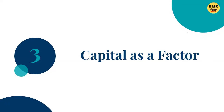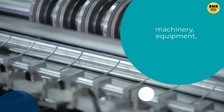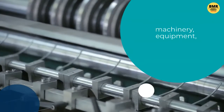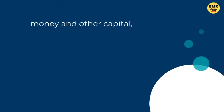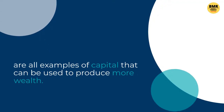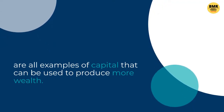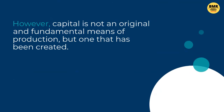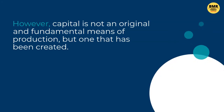Number three: capital as a factor. Human creations such as tools, machinery, equipment, money and other capital are all examples of capital that can be used to produce more wealth. However, capital is not an original and fundamental means of production but one that has been created.